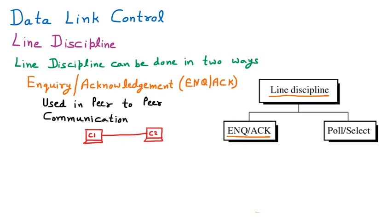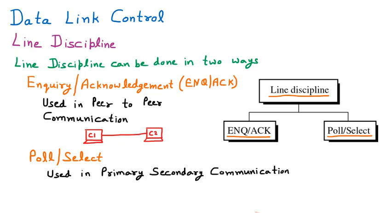The second type to achieve line discipline is called Poll and Select. As shown in the diagram, Poll and Select is used when there is one primary system and other secondary systems. We can say it is used in primary and secondary communication. For example, in a classroom, the faculty is primary and the students are secondary. If the primary says a student has to talk, the student gives the answer. So the secondary acts on what the primary says.